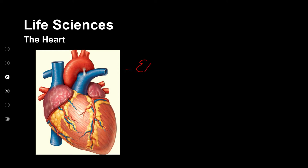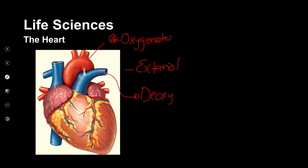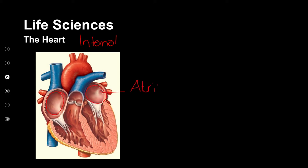When we look at the heart, we can see it has an external view showing a whole lot of blood vessels. We often use red to show oxygenated — full of oxygen — and we use blue to show deoxygenated, meaning filled with carbon dioxide. We're also going to have a look at the inside of the heart. The internal structure is made up of chambers: the top chambers are called the atrium, and we're going to have the bottom chambers, which are going to be the ventricles.